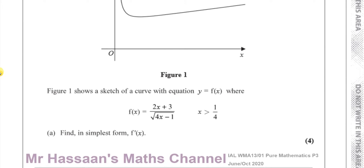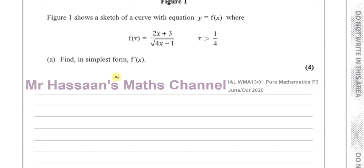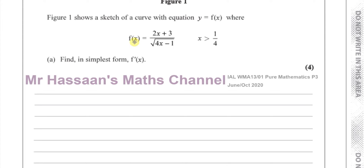They've told us to find, in the simplest form, f dash of x — which means the derivative or gradient function of f of x. So we've got to differentiate this. One of the mistakes students make is to differentiate the numerator and denominator separately and keep them as numerator over denominator. You cannot do that — you have to use the quotient rule.